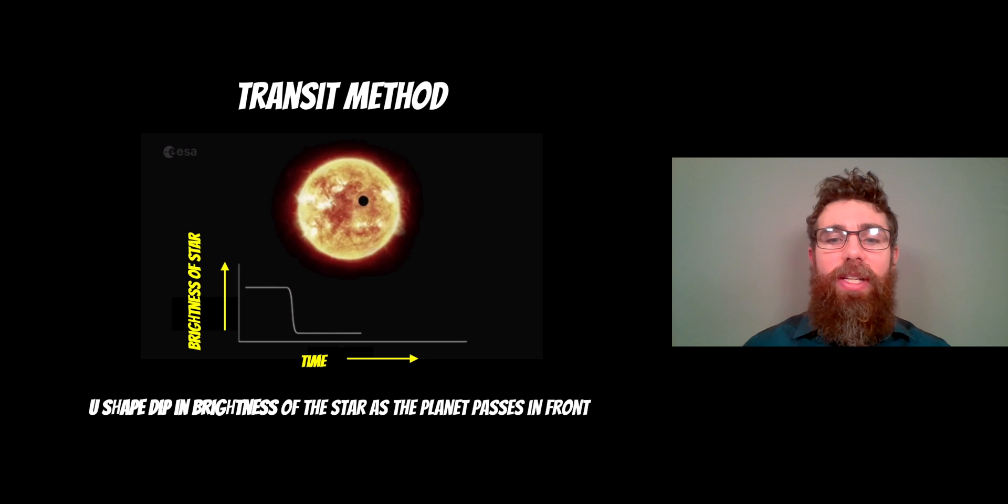But how do we actually get the radius of the planet just by looking at that transit? Because that's the only information we have—that U-shaped dip in brightness. How do we get that radius?